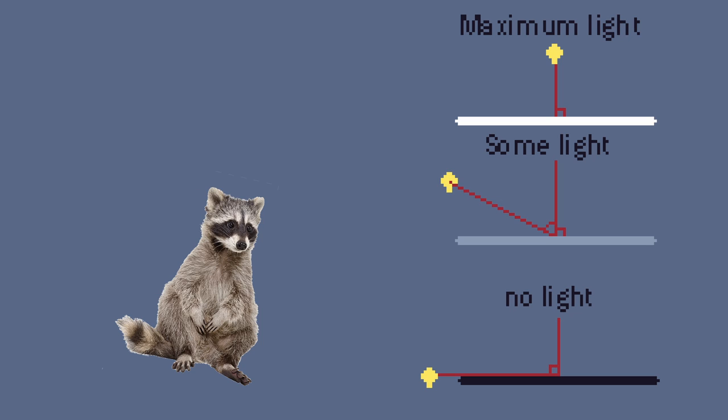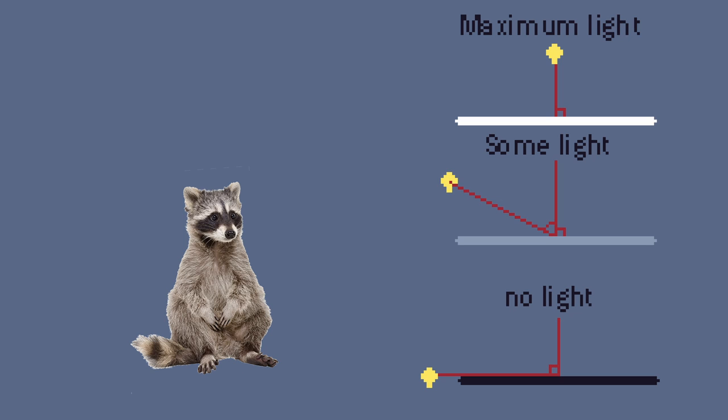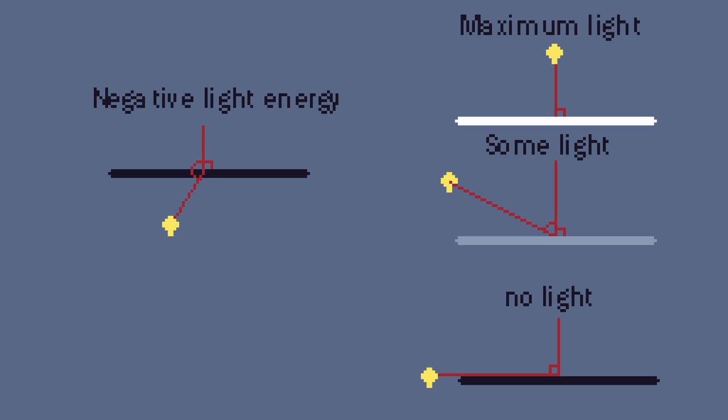One great bonus of this is that if our light intensity value is negative it means that the light is coming from behind the polygon and therefore the polygon is invisible. Since we don't need to render invisible things we can just simply delete them before we actually render them. This is called backface culling.